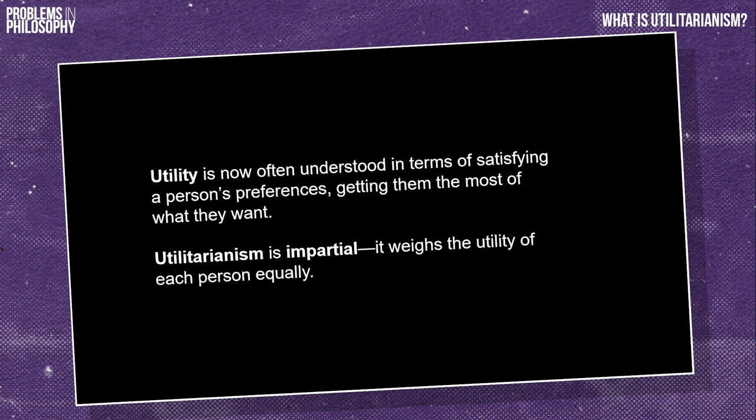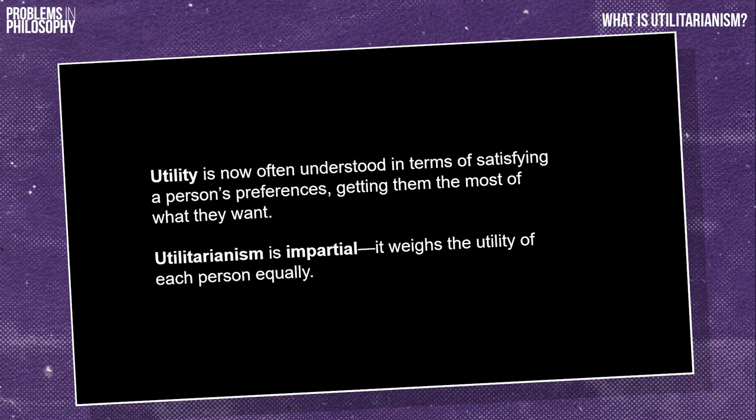Notice that the value of an option depends on the utility it produces, not on who is getting it. Utilitarianism is impartial — it argues that what you should do depends only on the results for others and not, for example, on your relationships to them. And so if two people face the same options, they should make the same choices. Utilitarianism is also what's called agent neutral: what's important is objectively important, so it can't matter to different degrees to different people.